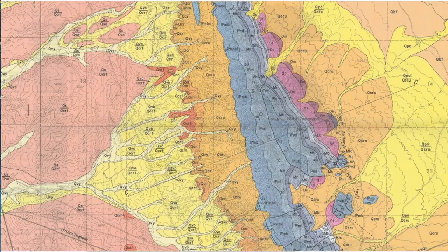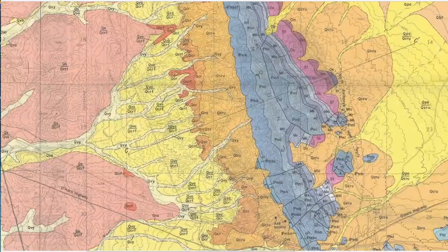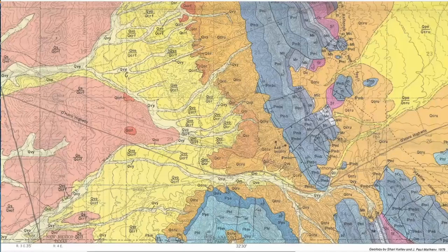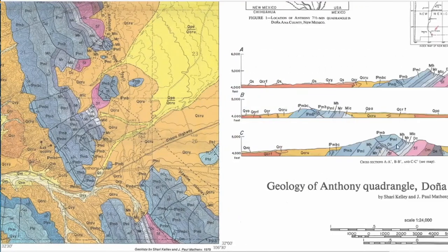You also have cross-section lines on the map, tied to a cross-section shown on the side. It's basically a slice of the earth — based on rocks seen at the surface, you can draw what's underground. There are three cross-sections on this map, and you can clearly see the fault in them.